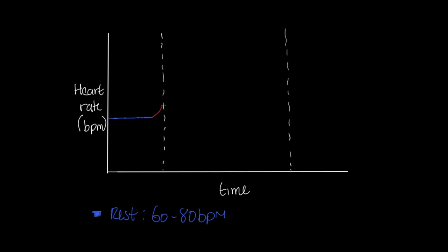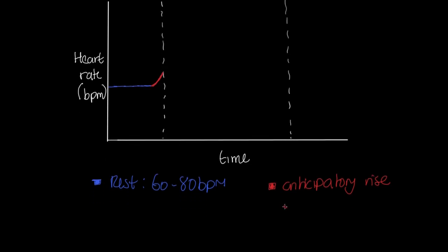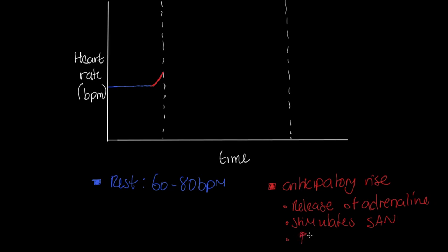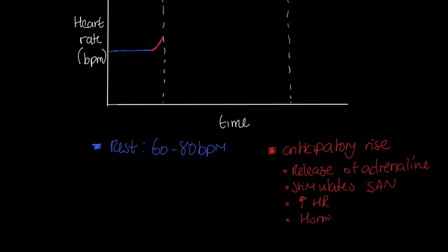Before exercise starts, this individual is going to experience this red profile, which we call an anticipatory rise. Before we've started doing any kind of exercise, our heart rate has already risen. Why? We are getting a release of adrenaline from the adrenal gland — effectively part of our fight or flight mechanism. That release of adrenaline stimulates the SA node, the pacemaker of the heart, causing an increase in heart rate even though no additional intensity has taken place. We call this hormonal control.